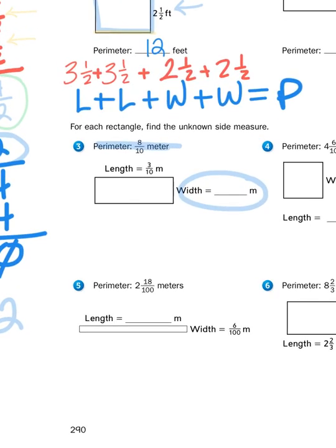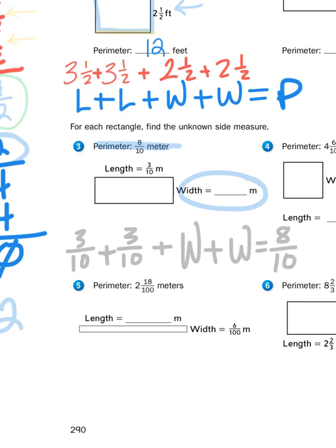So, using what information I already have, this is how I'm going to set up my problem. The length is three tenths, so three tenths plus three tenths plus, we'll say, w for width plus w for width again, equals the perimeter, which is eight tenths.